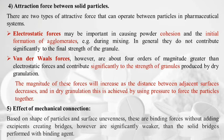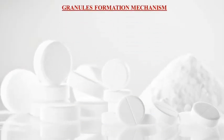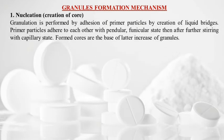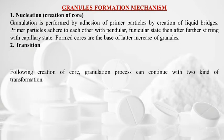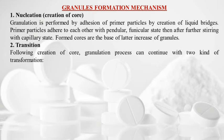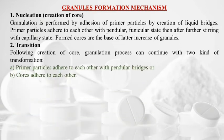Granule formation mechanism: First is nucleation or creation of core — granulation is performed by adhesion of primary particles by creation of liquid bridges; primary particles adhere with pendular and funicular state, then capillary state. The formed cores are the base for later growth of granules. Second is the transition state — following core creation, the granulation process continues with either primary particles adhering to each other with pendular bridges, or cores adhering to each other.